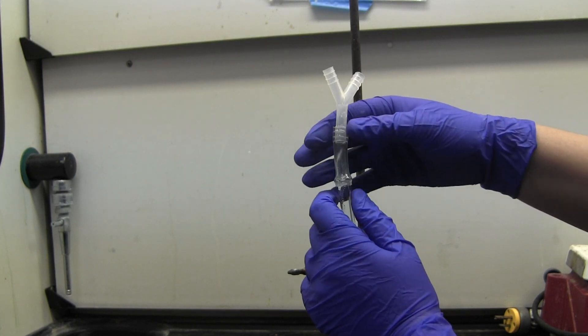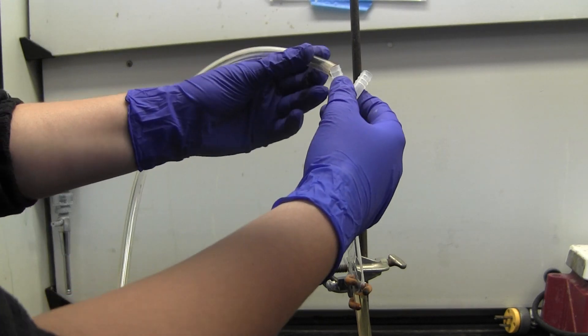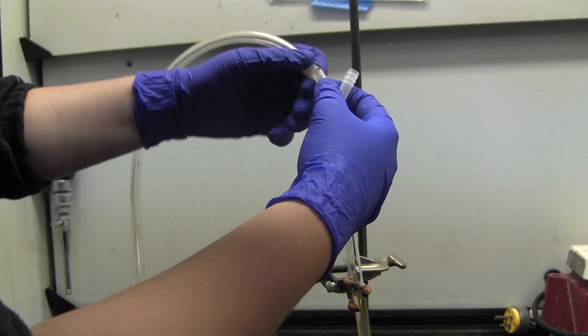To speed up the water, connect the plastic Y-joint to the top of the column. Then connect it with a tube to the nitrogen outlet. Make sure the stopcock is open.